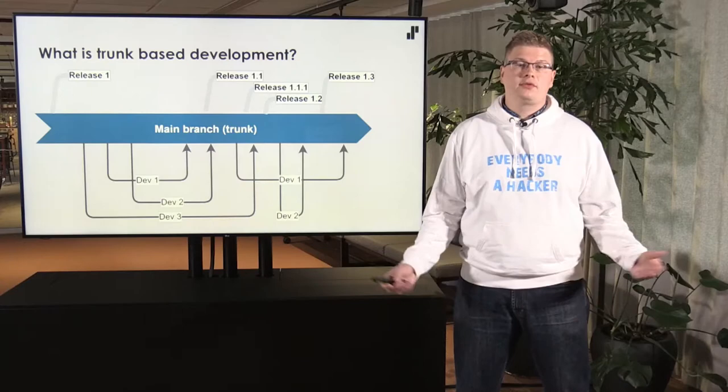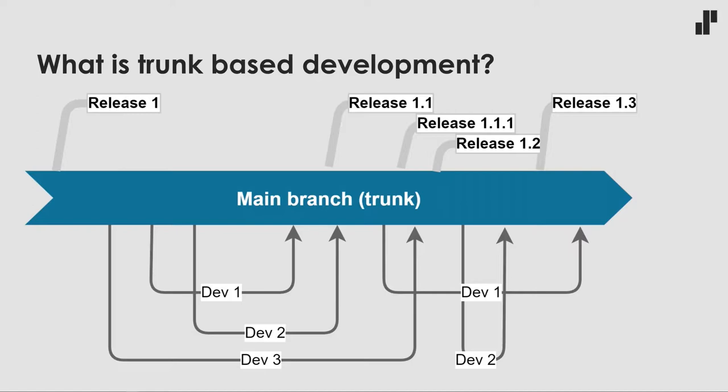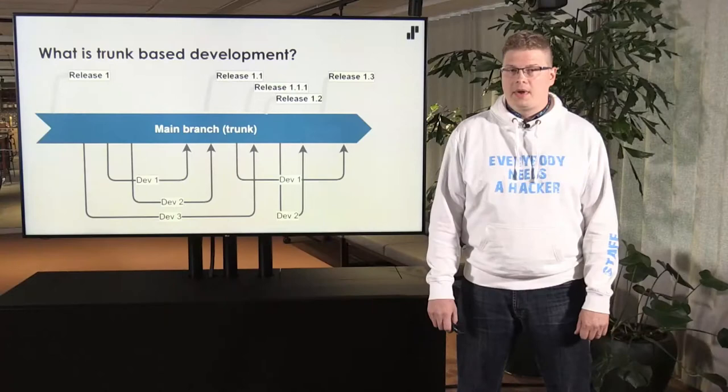So what is trunk-based development? First of all, only one long-living branch matters, which is normally called main or master, and in trunk-based development it's also called trunk. Each environment is deployed from master, and with continuous deployment all commits to master or main are triggering continuous integration and automatic deployments. The main idea is that developers are doing small commits to main and each of those are making a new version of the software.